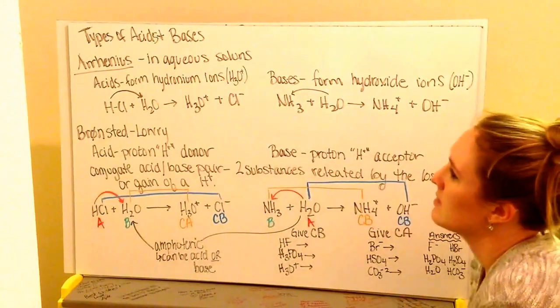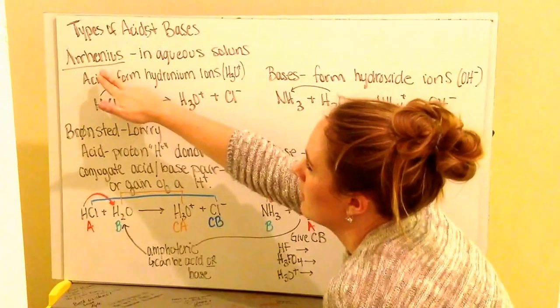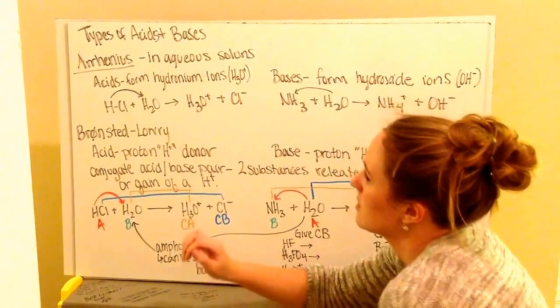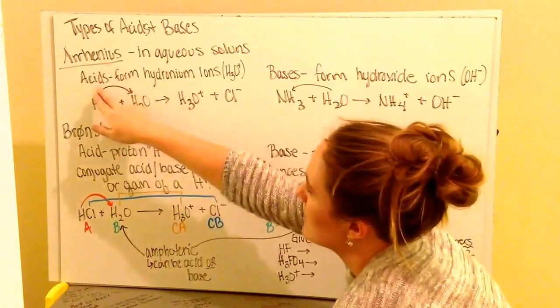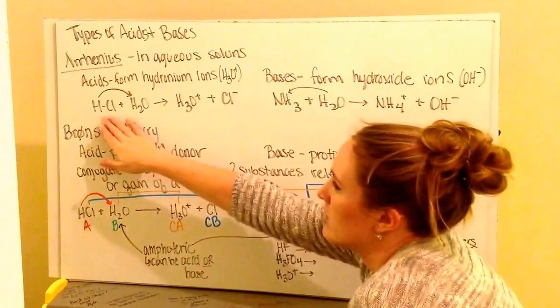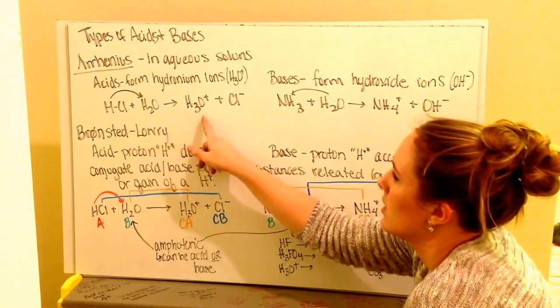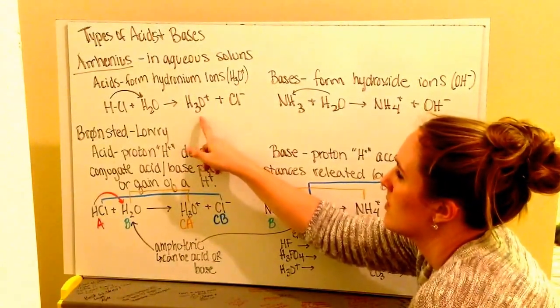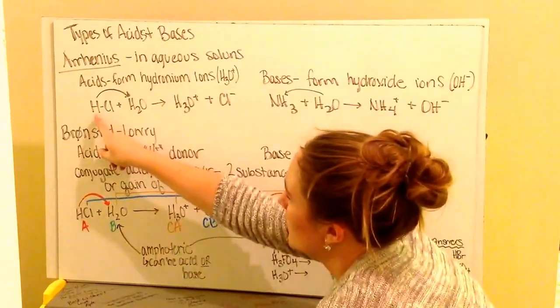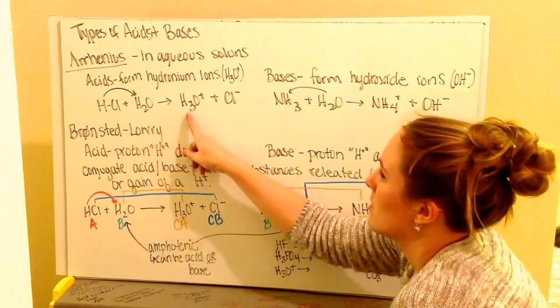Different types of acids and bases. We have the Arrhenius, A-R-R-H-E-N-I-U-S. These are going to be in aqueous solutions. So an Arrhenius acid is going to form hydronium ions, which is that H3O+. An example would be hydrochloric acid, HCl, plus water. It's going to yield H3O+, so a hydronium ion, plus Cl-, which is your chloride ion. Your hydrogen is going from the HCl to the water, and that's where the hydronium ion is coming from.